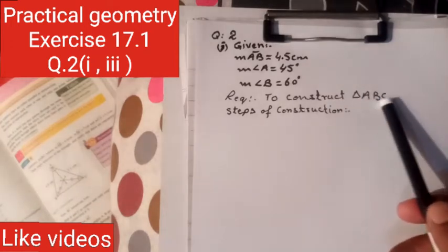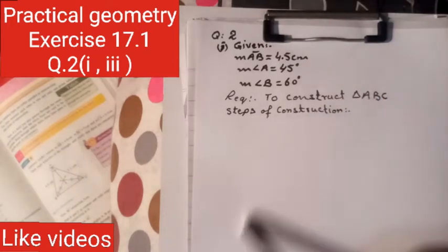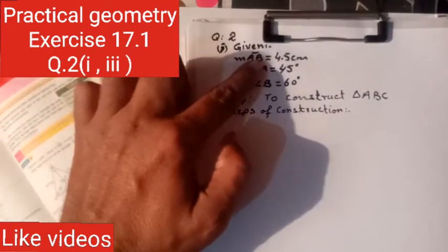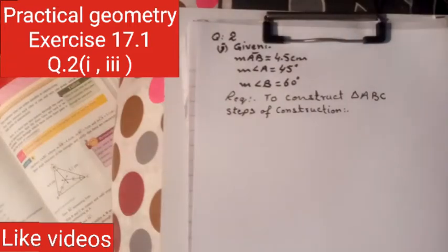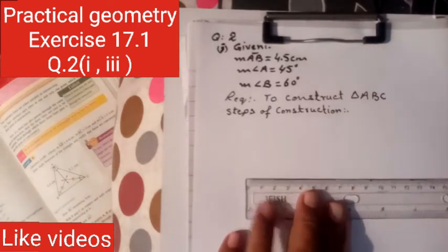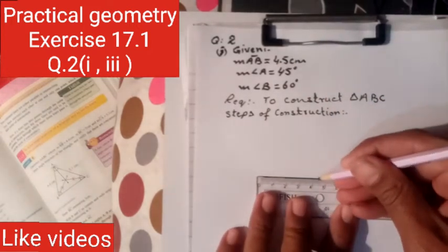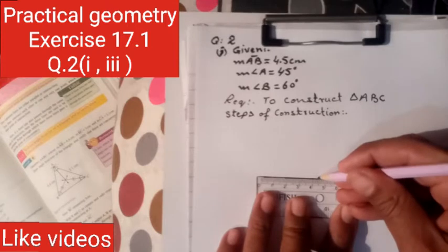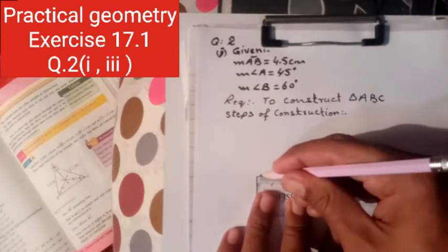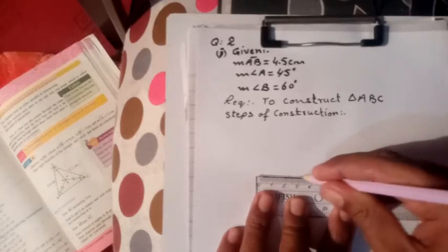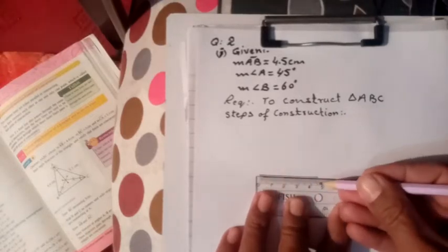Required to construct triangle ABC. Steps of construction: the first step is to draw one side and use two angles. The second step is to make the AB side equal to 4.5 cm.